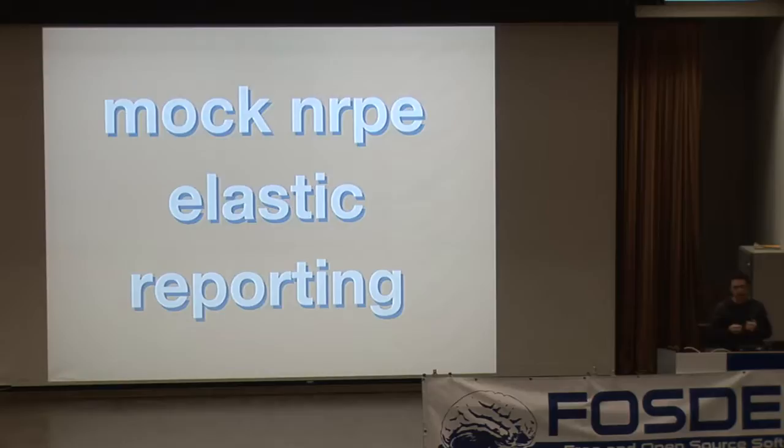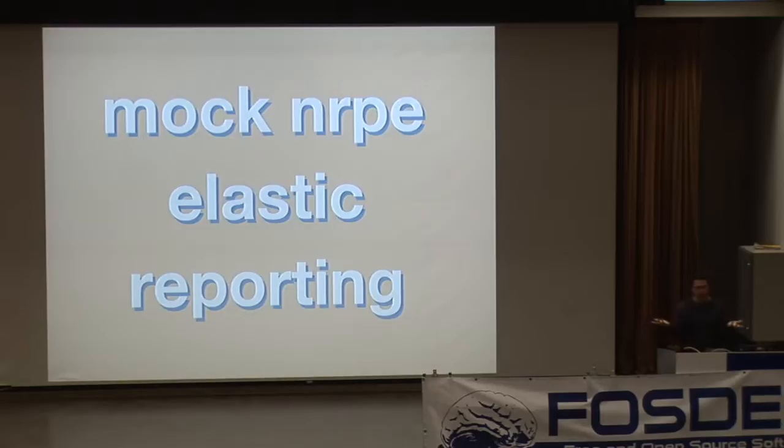This lends itself to some really interesting things, like a mock NRPE instance where you could use Flapjack to execute all your checks with your existing Nagios monitoring system but it doesn't actually do any of the notification — it just feeds the information back to Nagios. So you can use Nagios at the same time as using Flapjack, running them in parallel.